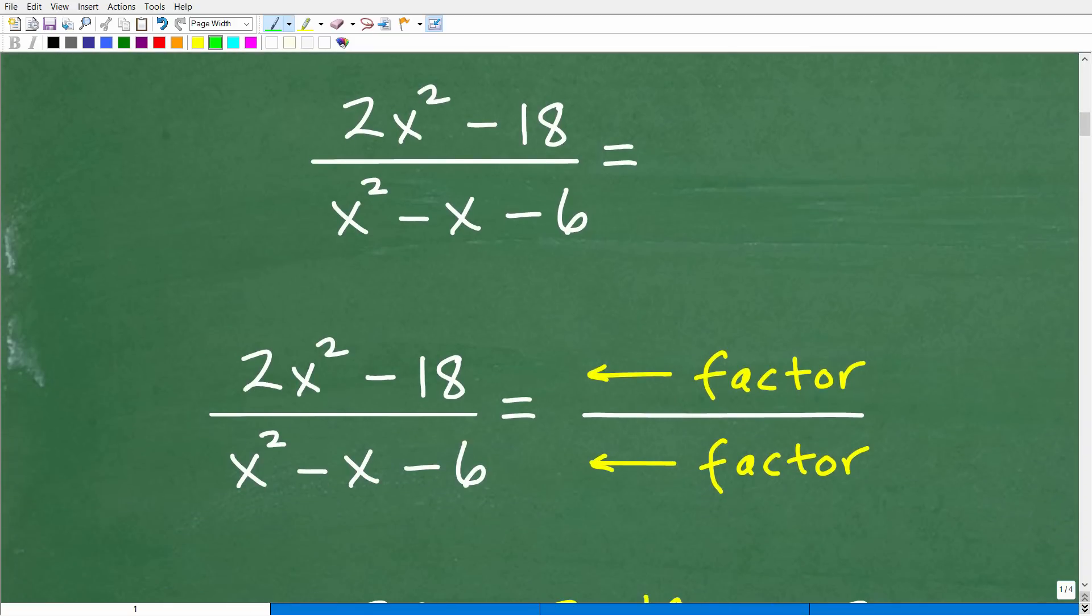So here is the problem. Again, we have 2x squared minus 18 over x squared minus x minus 6. Now, what we want to do is to write this in a simpler way. Now, we don't know if that's possible or not.